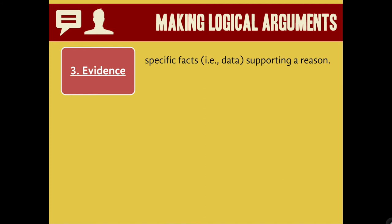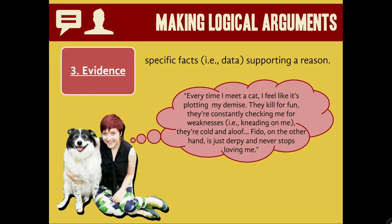Specific facts — which can include quantitative data — support your reason and make it more compelling. I think dogs are better than cats because every time I meet a cat, I feel like it's plotting my demise. They kill for fun, they constantly check me for weaknesses — like when they knead on you — they're cold and aloof, whereas dogs are just derpy and never stop loving you. This is a whole boatload of evidence to support my claim that dogs are better than cats.